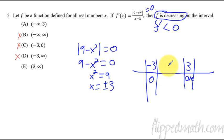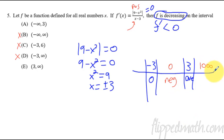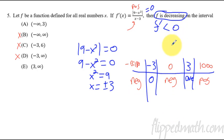The numerator is always positive (absolute value), so I only need to check the denominator's sign. Plugging in 0: zero minus 3 is negative, so the derivative is negative between negative 3 and 3. Plugging in 1000 (greater than 3): 1000 minus 3 is positive. Plugging in negative billion (less than negative 3): negative billion minus 3 is also negative. So the derivative is negative for x less than negative 3 and between negative 3 and 3, meaning the function is decreasing on negative infinity to 3. Hope this helped, and good luck on the test!